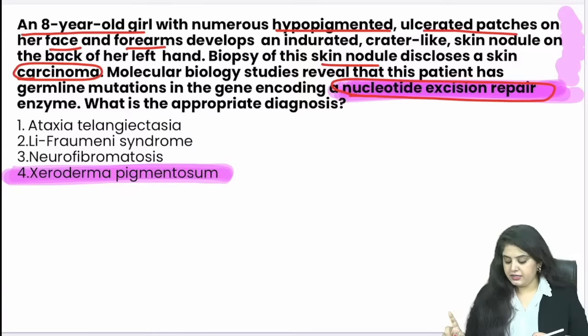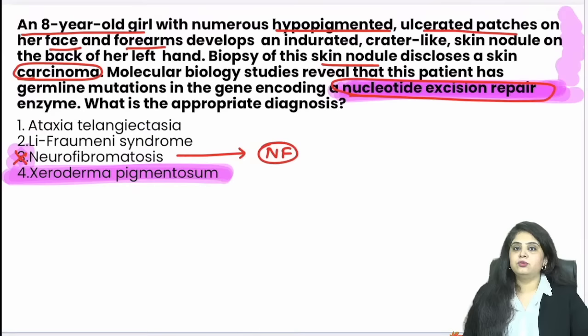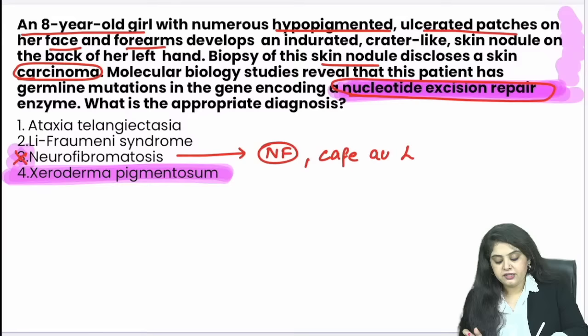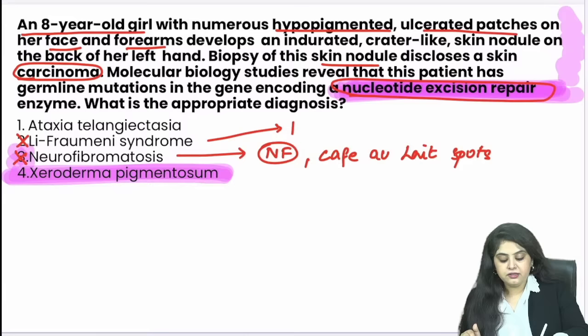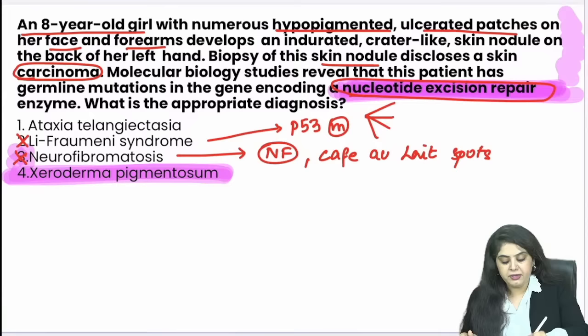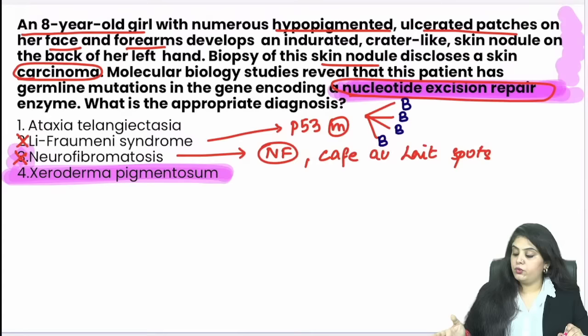Why not neurofibromatosis? Common sense — neurofibromatosis has neurofibromas; the neural component is missing here. And the skin lesions in NF1 are café au lait spots — totally different, not mentioned here. Why not Li-Fraumeni syndrome? Li-Fraumeni is a P53 mutation. When P53 is mutated, the patient shows B-B-B-B tumours: brain cancers, breast cancers, bone cancers, blood cancers — a whole family tree with these cancers. Not this case.